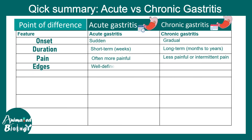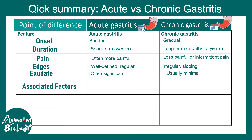Regarding ulceration, the edges are well-defined and regular in acute gastritis, while in chronic gastritis they are highly irregular and sloping. In terms of exudate — the fluid that leaks into the nearby region — there is significant exudate in acute gastritis and only minimal levels in chronic gastritis.